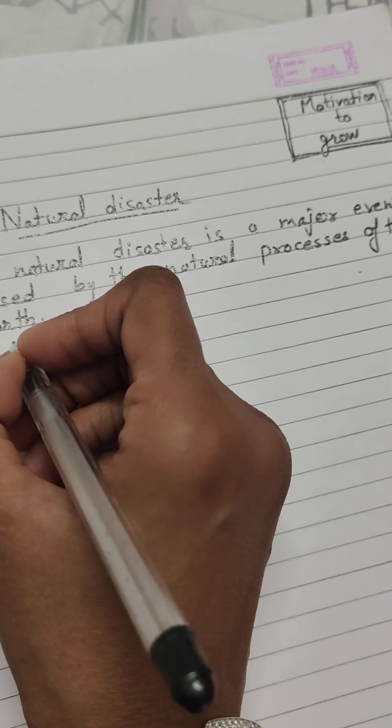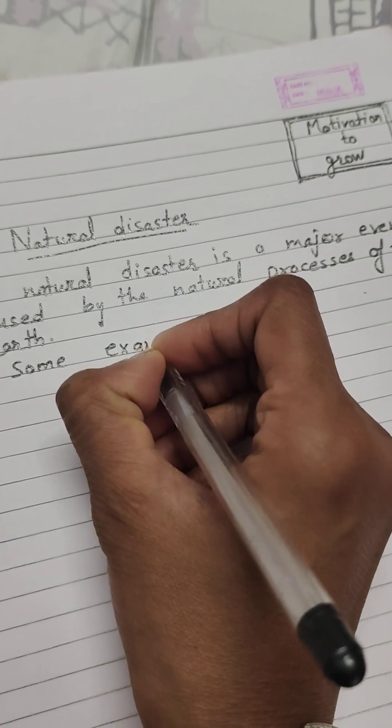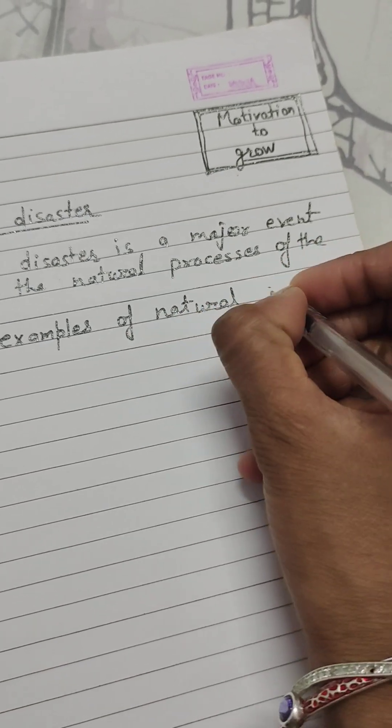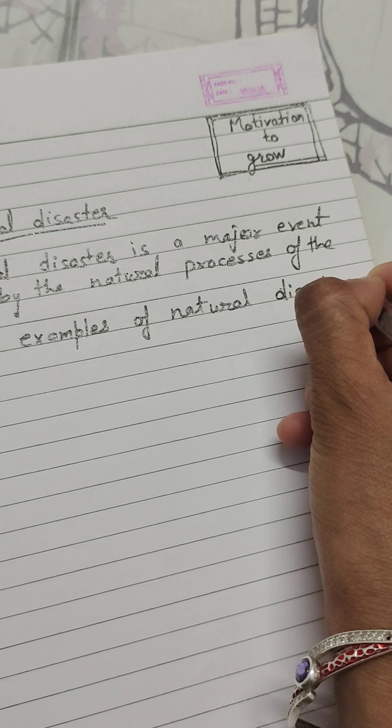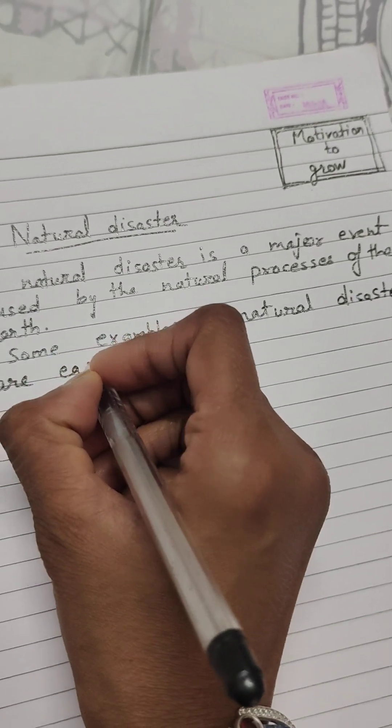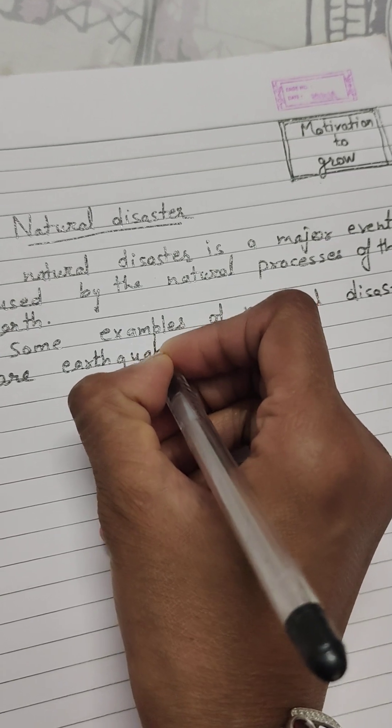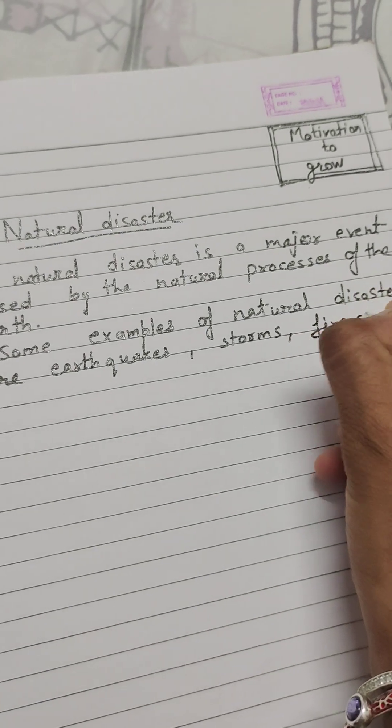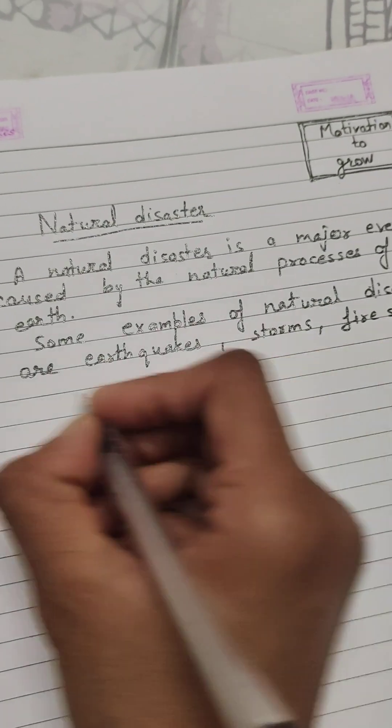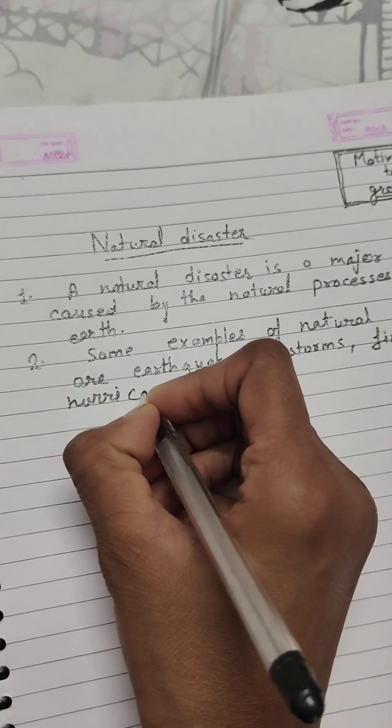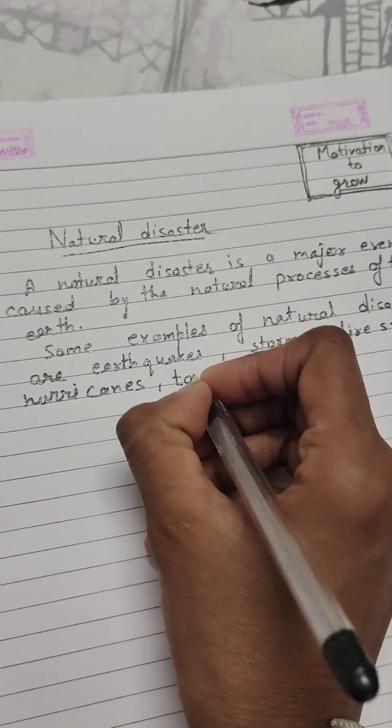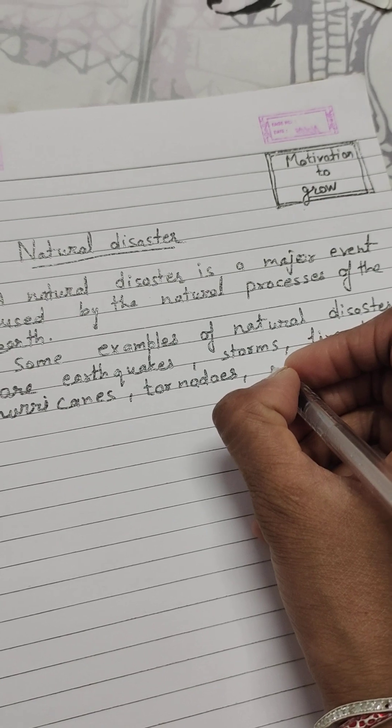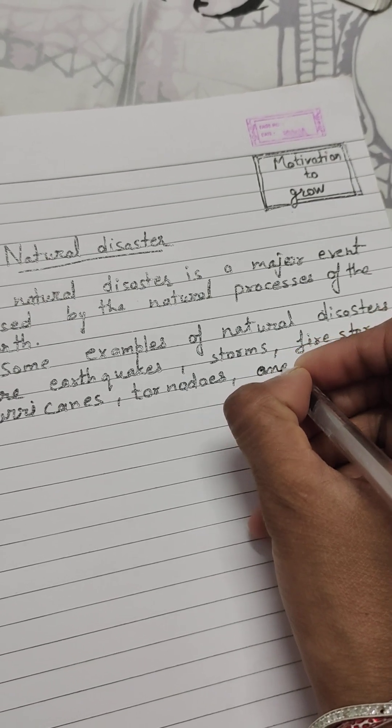Second point, some examples of natural disasters are earthquakes, storms, firestorms, hurricanes, tornadoes, and tsunamis.